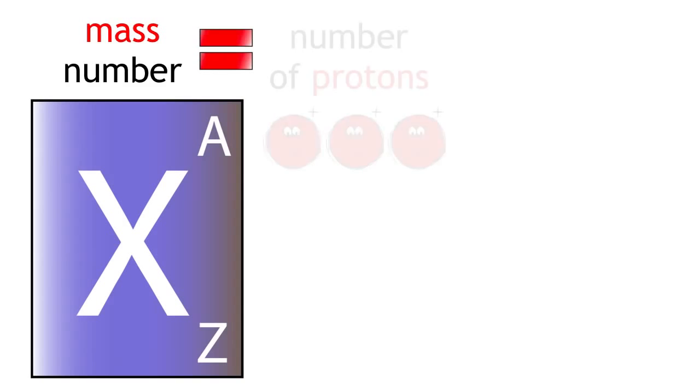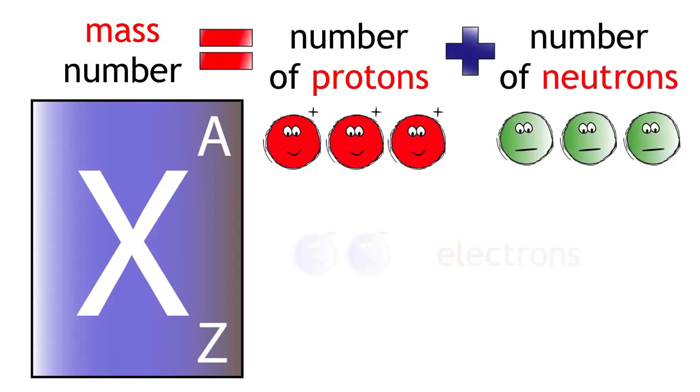The mass number is equal to the number of protons plus the number of neutrons. We can ignore the electrons as their mass is so tiny.